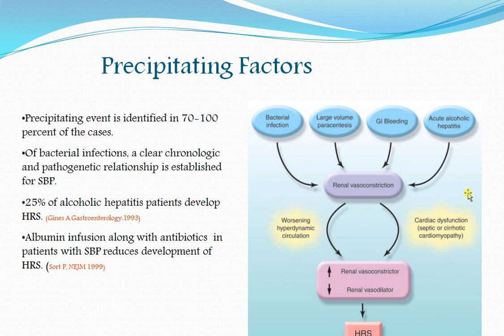Precipitating factors for hepatorenal syndrome include bacterial infections, large volume paracentesis, GI bleed, and alcoholic acute hepatitis — all leading to renal vasoconstriction. A precipitating event is identified in up to 70 to 100 percent of cases. For bacterial infections, a clear chronologic and pathogenic relationship is established, especially for spontaneous bacterial peritonitis. 25% of alcoholic hepatitis patients develop HRS.